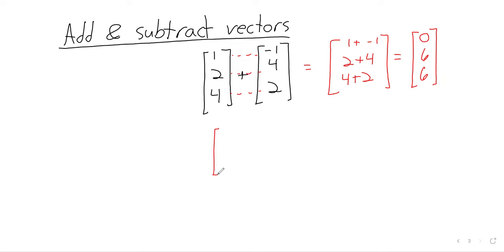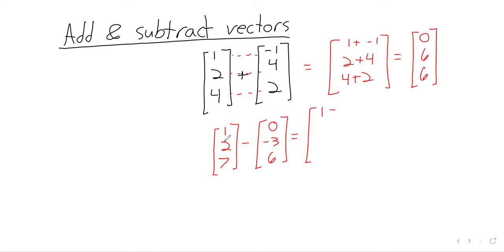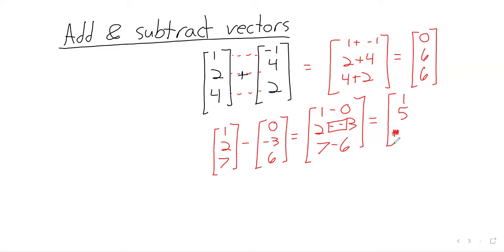Subtraction is also done component-wise. For example: one, two, seven, minus zero, negative three, six. That's one minus zero, two minus negative three — just putting two minus signs next to each other is not great notation, but that minus a negative is going to turn into addition — and seven minus six is positive one.